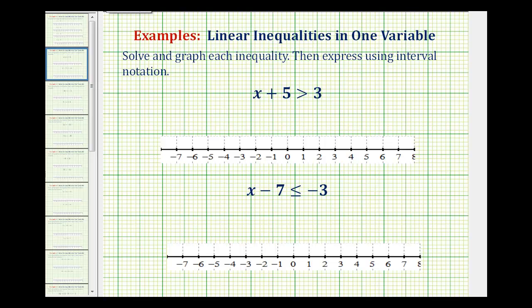We want to solve and graph each inequality and then express using interval notation. Here we have x plus 5 is greater than 3, so our goal is to isolate x on the left side of the inequality, so we want to undo this plus 5. Well, the opposite of plus 5 is minus 5, so we'll subtract 5 on both sides of the inequality.